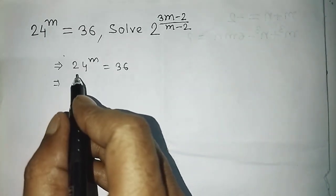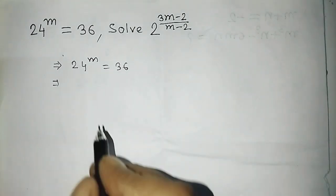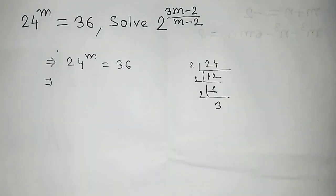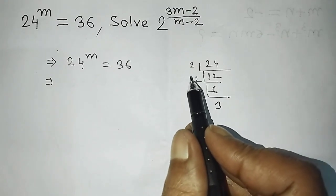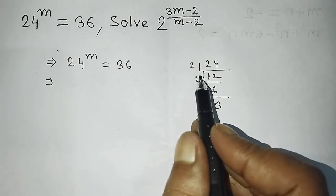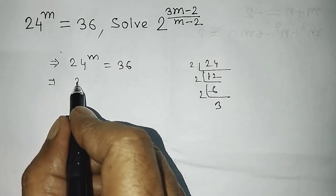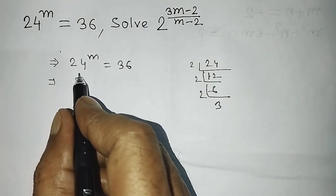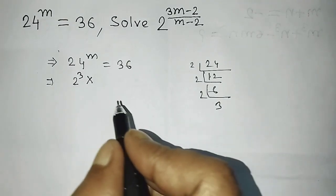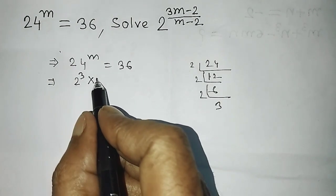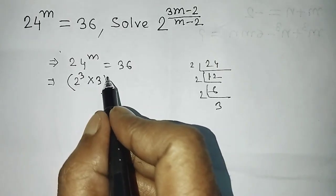To do that, you need to break 24 and 36. For 24, do the LCM. Looking here: 2 appears 3 times, so write 2 to the power 3. And 3 appears 1 time, so write 3 to the power 1. Then the whole expression is raised to the power m.